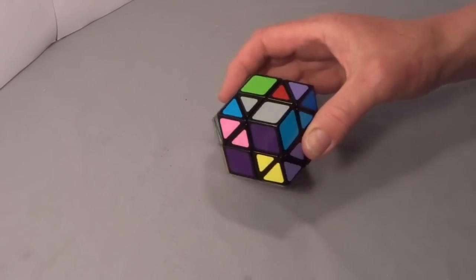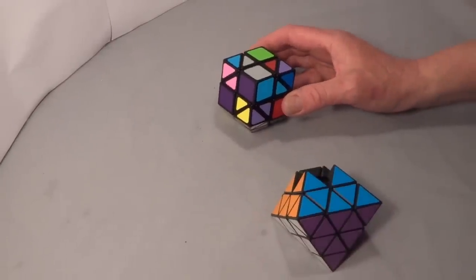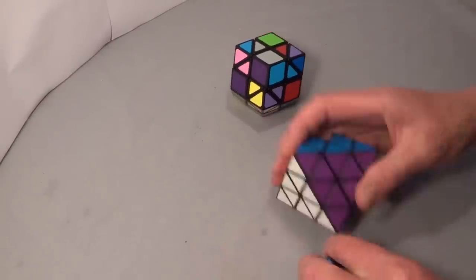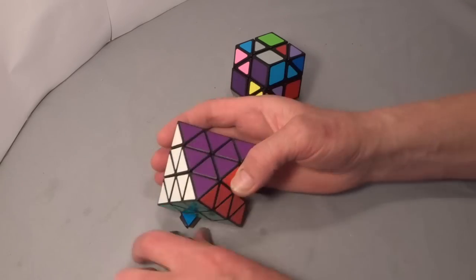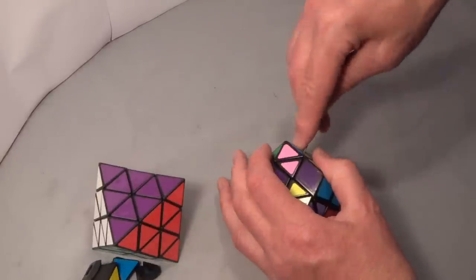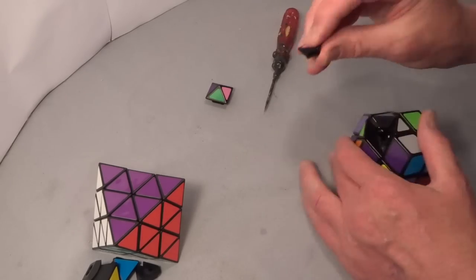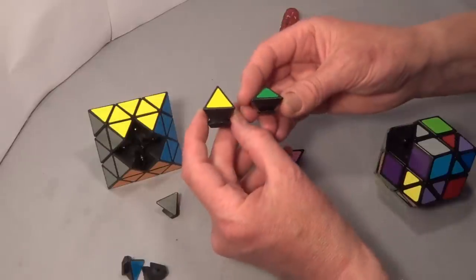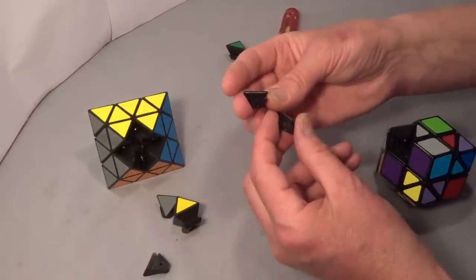But what I do want to do in this video is just do a quick comparison, because I've got a face-turning octahedron here, and a lot of the parts are similar. So if I just pry out one of these and one of those, you'll see that those parts are very similar, and the same with the triangles.